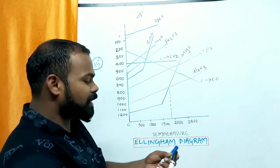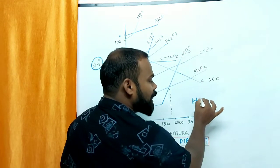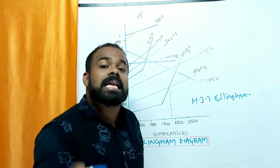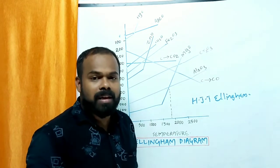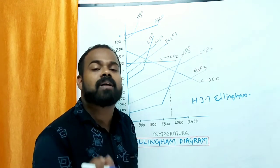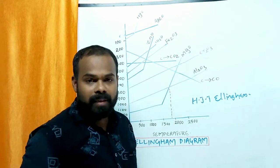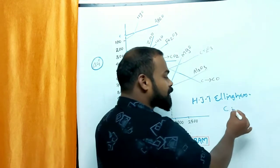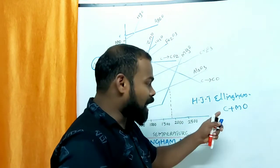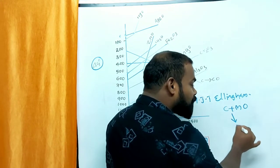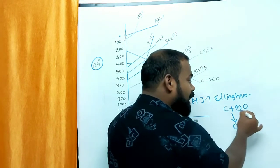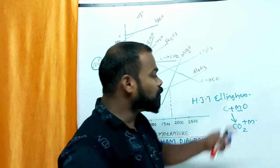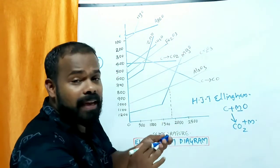The scientist H.J.T. Ellingham explained this. He said that to select the reducing agent — which chemicals, which reagents, which compounds are suitable to reduce other compounds — we need this diagram. Generally, carbon is taken as the best reducing agent. When carbon is mixed with some oxide, the carbon is converted to carbon monoxide or carbon dioxide, and that element M will be separated off. That means reduction occurs — removal of oxygen occurs.